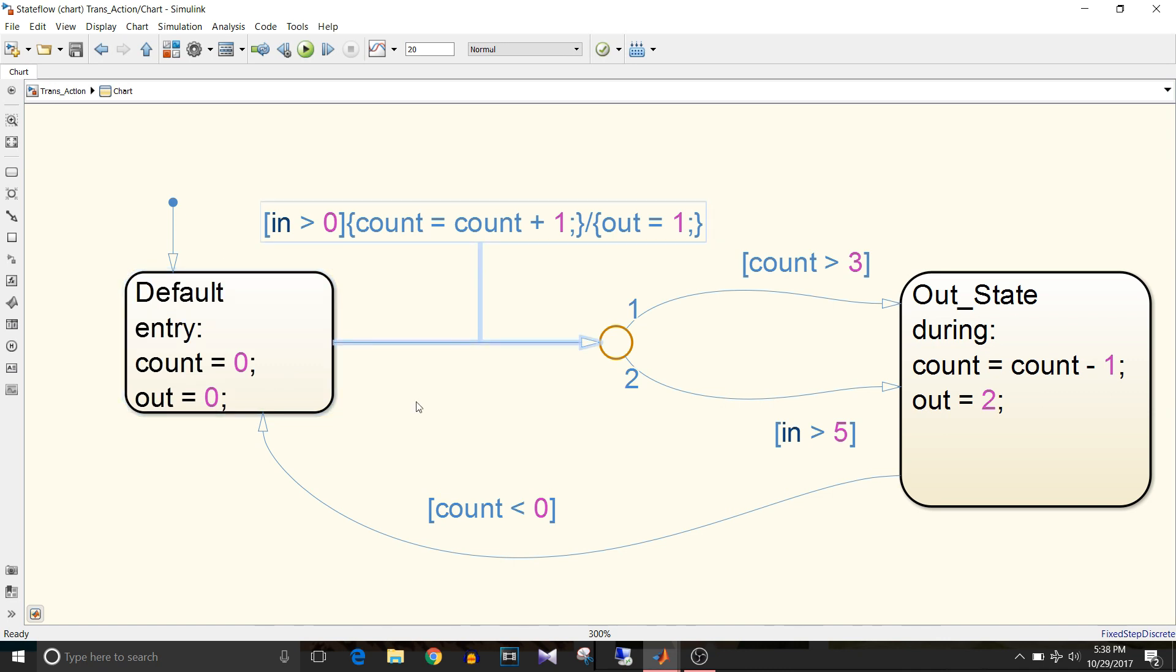Now when input will be greater than 0, count equal to count plus 1. This condition action will be taken, but the part that is slash in curly braces, out equal to 1, will not be executed. The part after the slash is a transition action. That is how we write a transition action: slash and then the action to be taken.